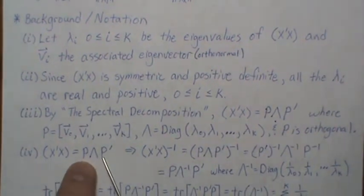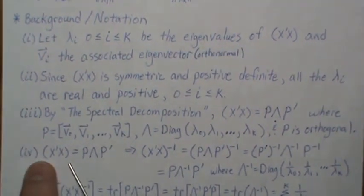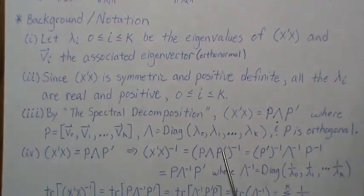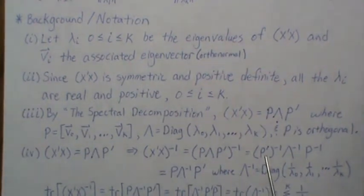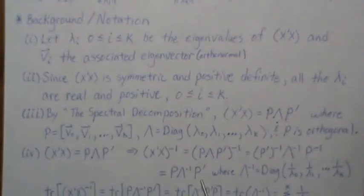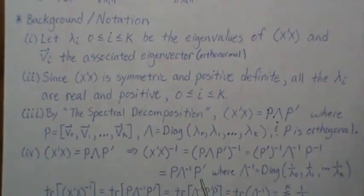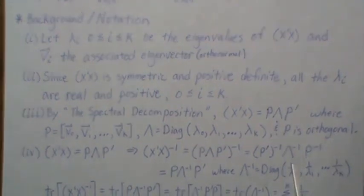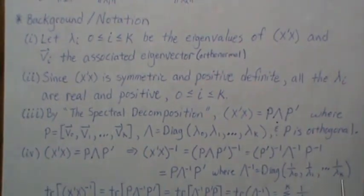X'X can be thought of as P Λ P'. If we take the inverse of X'X, it's the inverse of that product. Each factor is invertible, so we distribute the inverse sign. The inverse of an orthogonal matrix is its transpose, so inverse of P is P'. The inverse of the diagonal matrix Λ is the diagonal matrix of the reciprocals: 1/λ₀, 1/λ₁, and so on.